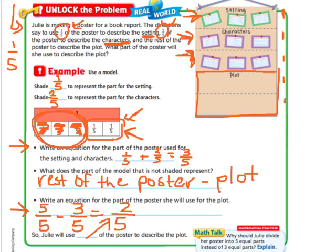Okay, so we can see, you can draw a model and easily see that it's two-fifths. Or you can do the math. Five-fifths minus three-fifths is two-fifths. As long as they have common denominators, it's pretty easy to figure that out.